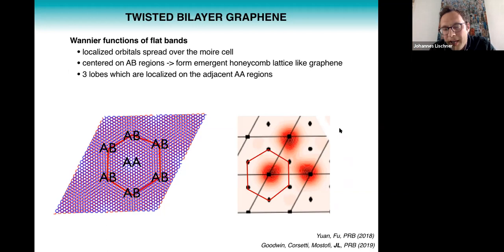Now if you look at an individual Wannier function like on the right hand side here, you see that each Wannier function has three lobes. These lobes are centered on the AA regions while the overall center of the Wannier function is the AB spot. So they have a very unique structure, these Wannier functions.